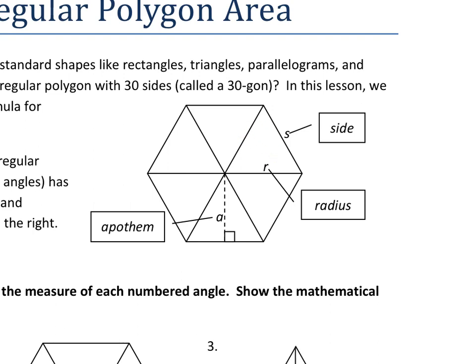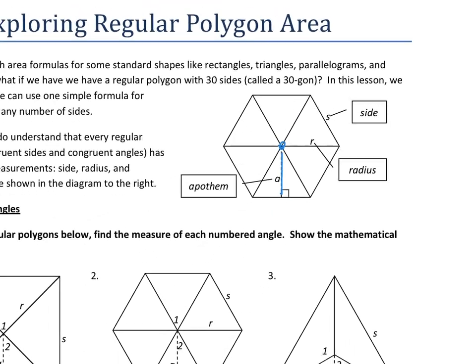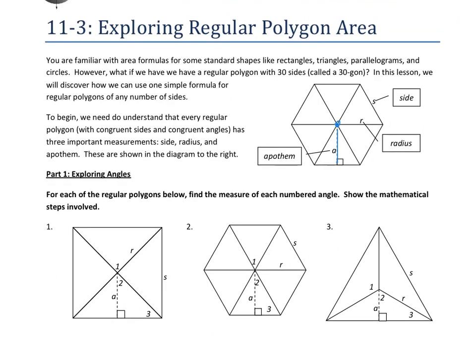A couple of vocabulary terms here. We've got sides, which is pretty obvious — this is the side of a polygon. A regular polygon also has something called a radius, just like a circle does. Technically it's called a radius because that's the radius of the circumscribed circle that goes around it. And then we have this thing called the apothem, which is the perpendicular line that goes from the center of the regular polygon to the side. Those are all the parts and pieces we need to find the area.